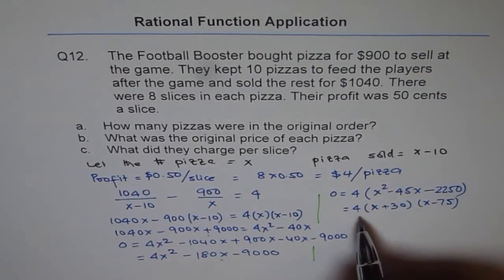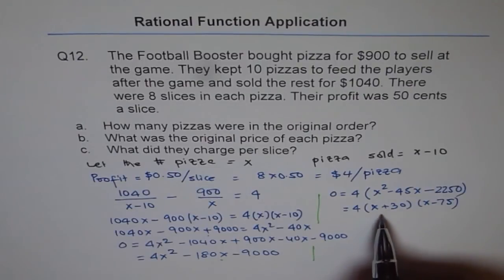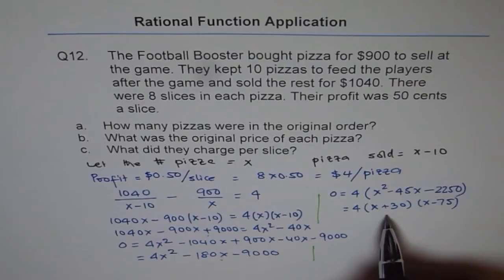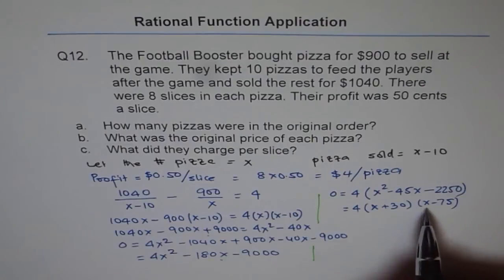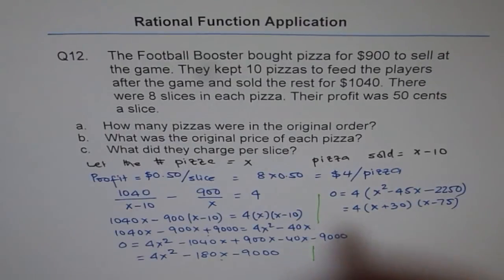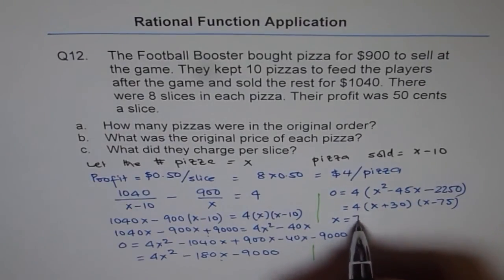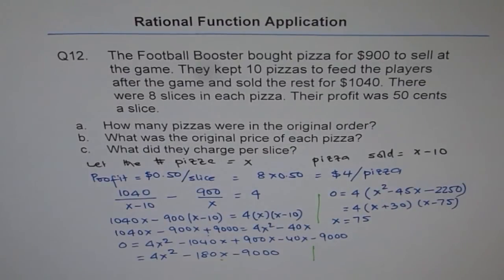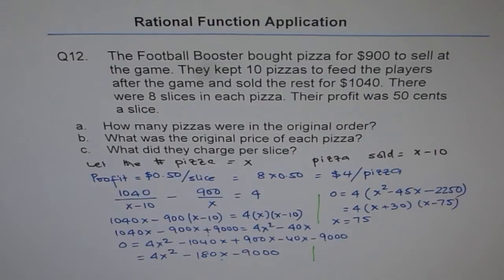Using the quadratic formula or factoring gives two values. This expression equals zero when X is minus 30, but X cannot be negative since we are talking about a real situation where everything must be positive. So the solution is X equals 75. There were 75 pizzas in the original order.